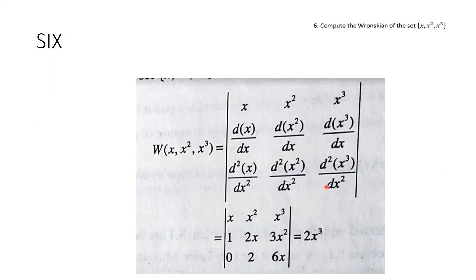Number six was just computing the Wronskian of this set, and it was pretty straightforward. You compute the determinant, and you get 2x cubed.